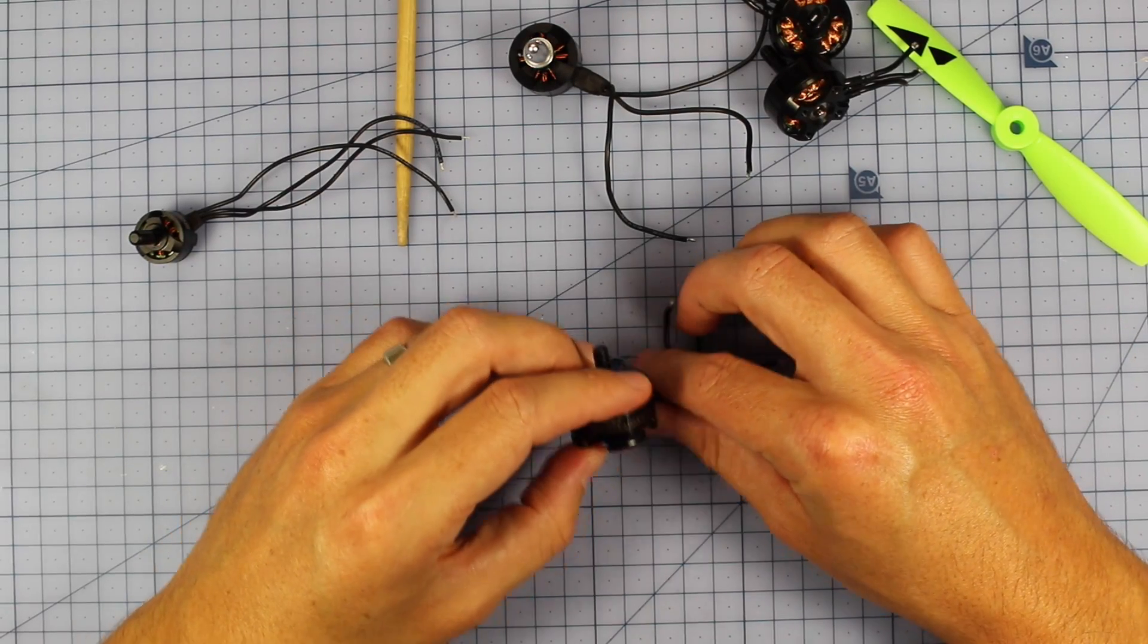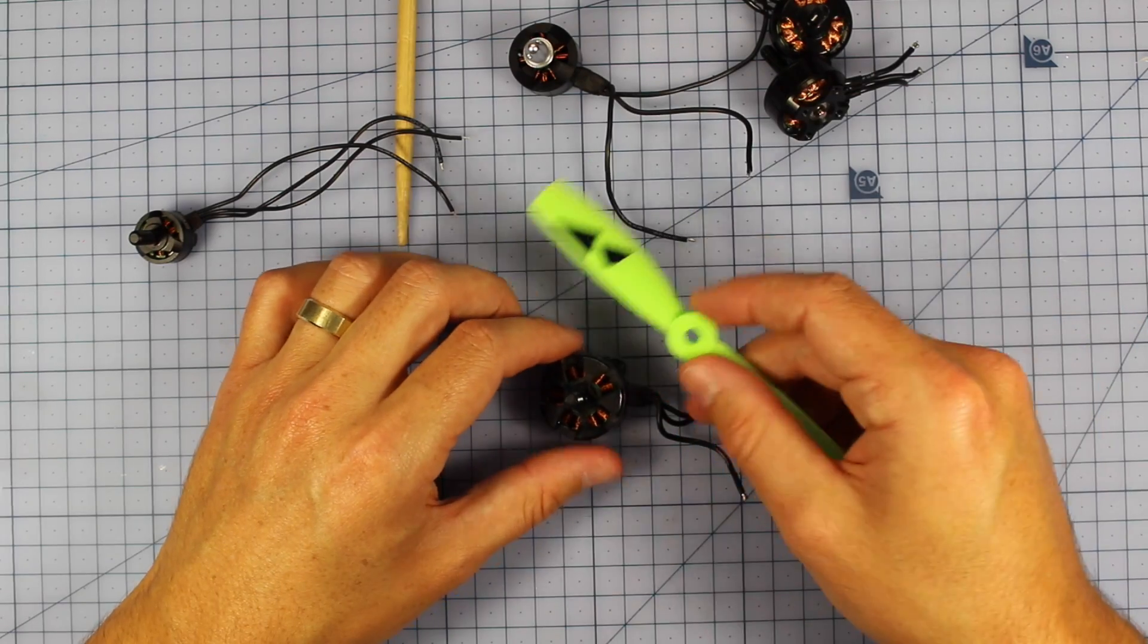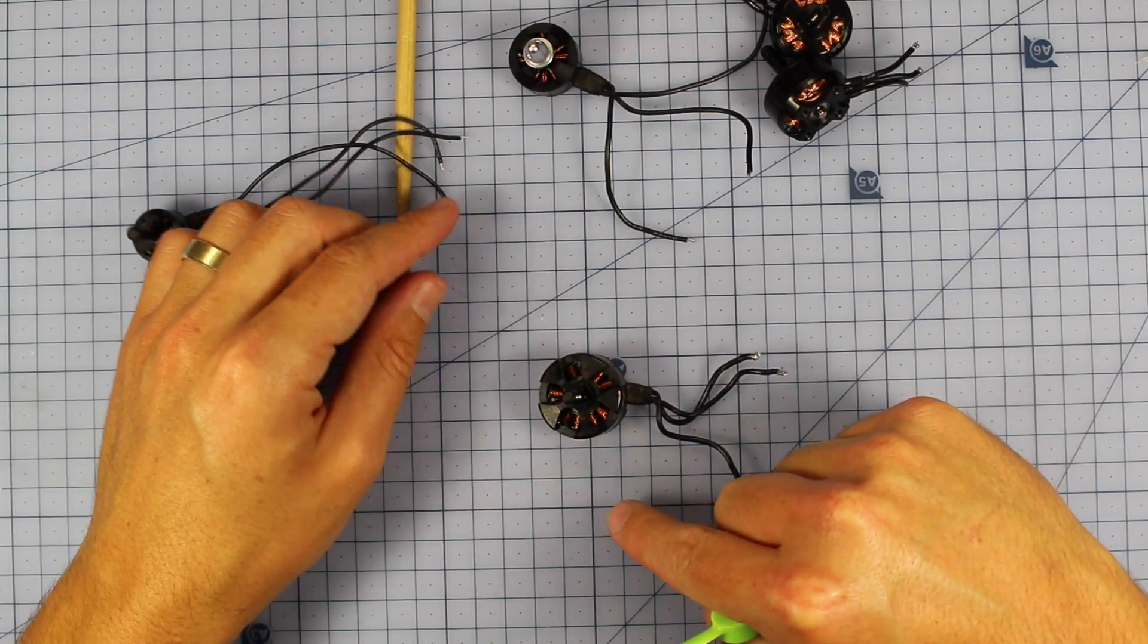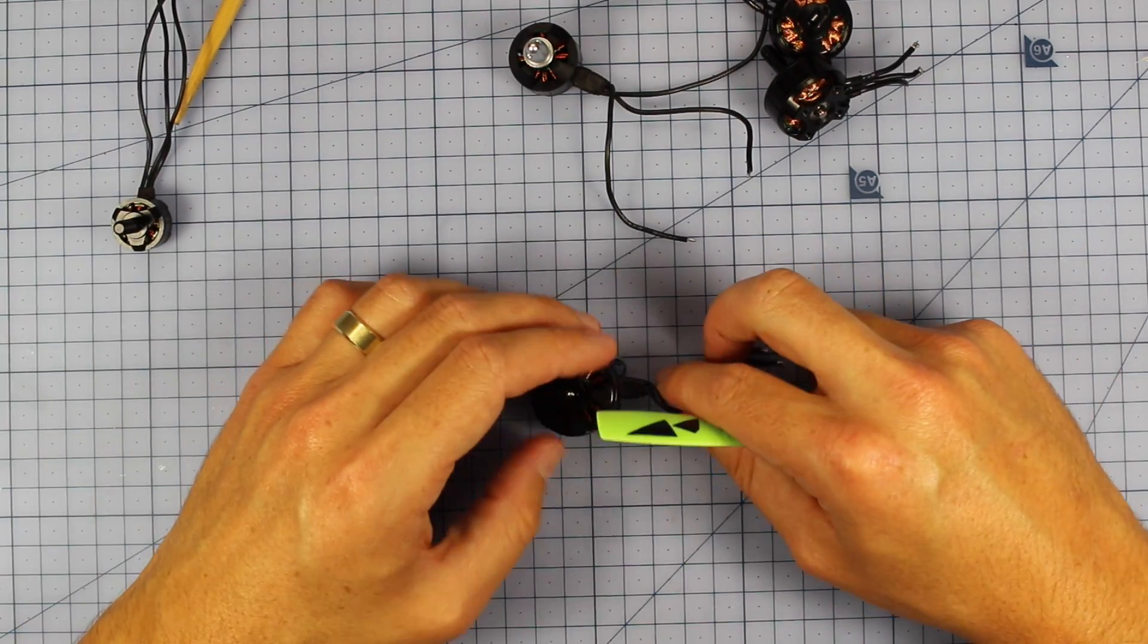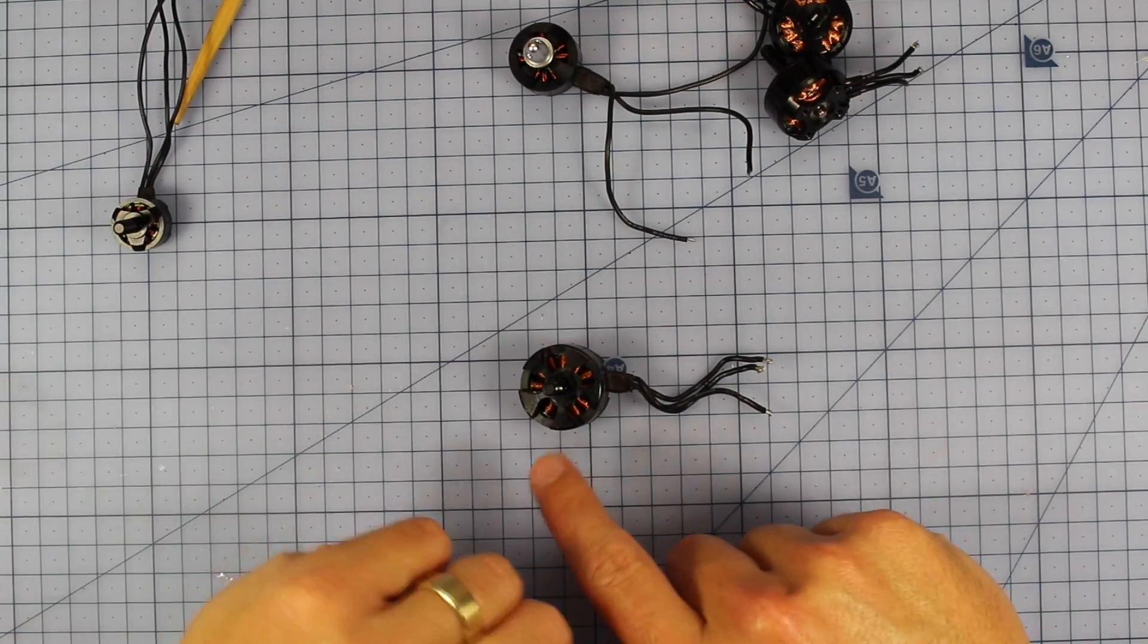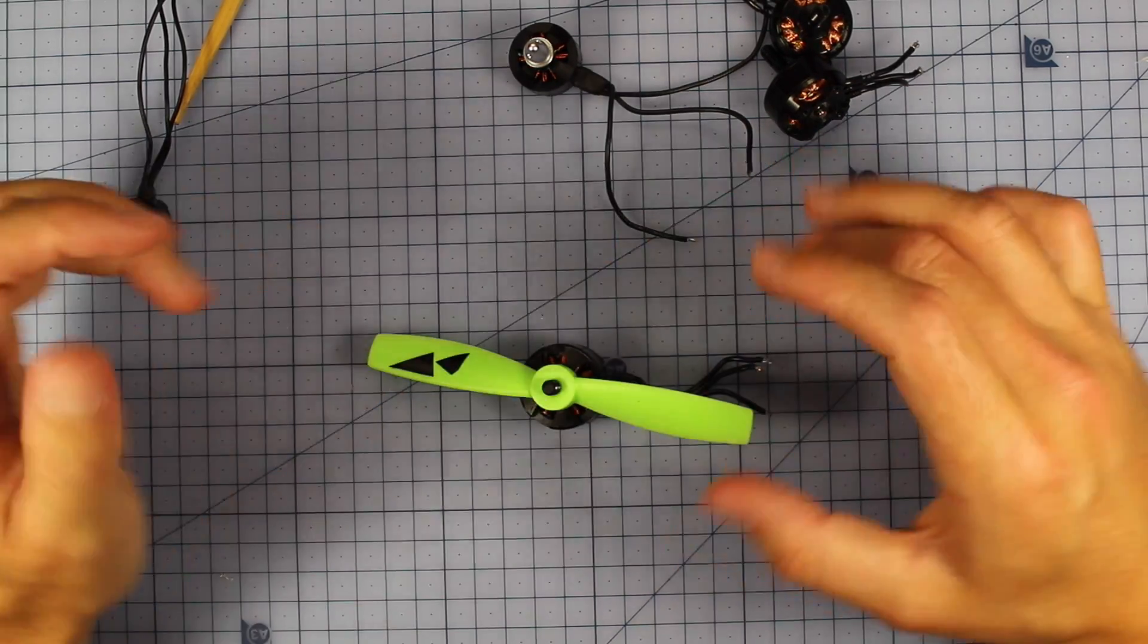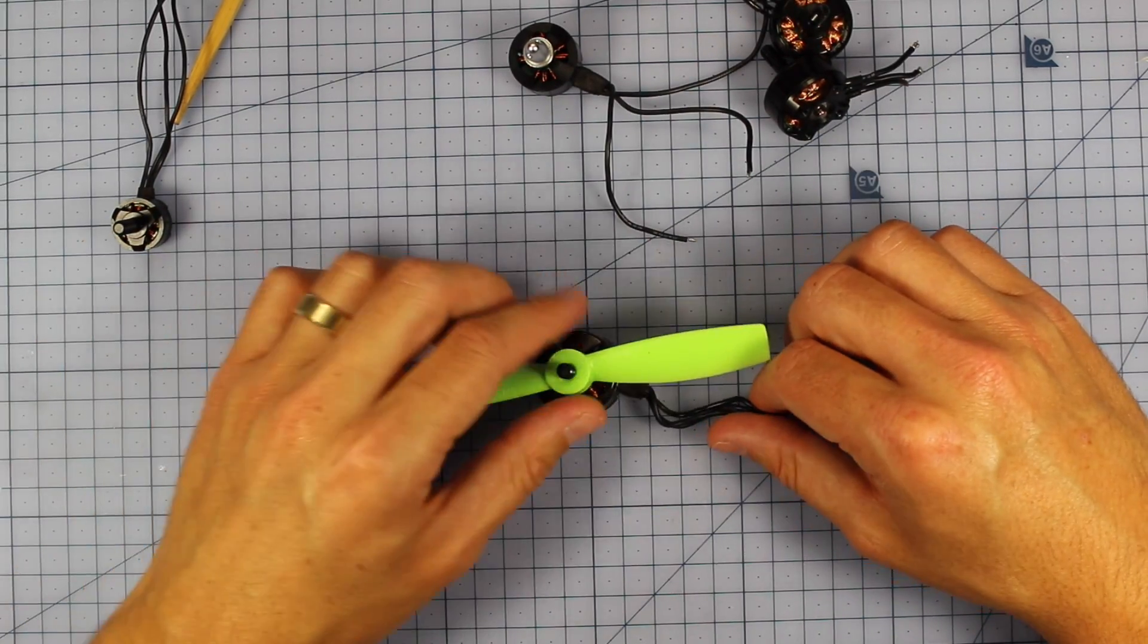For example, this motor, this is an Emax 2204 2300KV motor. If I put on say a 5030 old gem fan sort of prop that really didn't have very much bite at all, it wouldn't pull too many amps and it'll be a bit nicer on my ESCs. But if I loaded this up, say with a bullnose or even a tri or quad blade prop, it's going to pull a lot more amps.